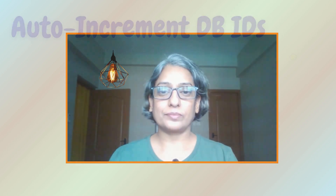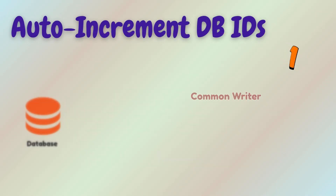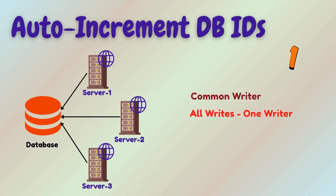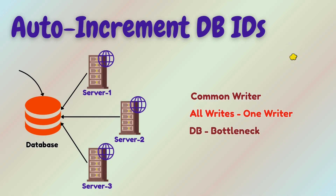This works beautifully until you scale. Why does it break at scale? You have one writer, as all writes must go through the same node, and the DB becomes a bottleneck.